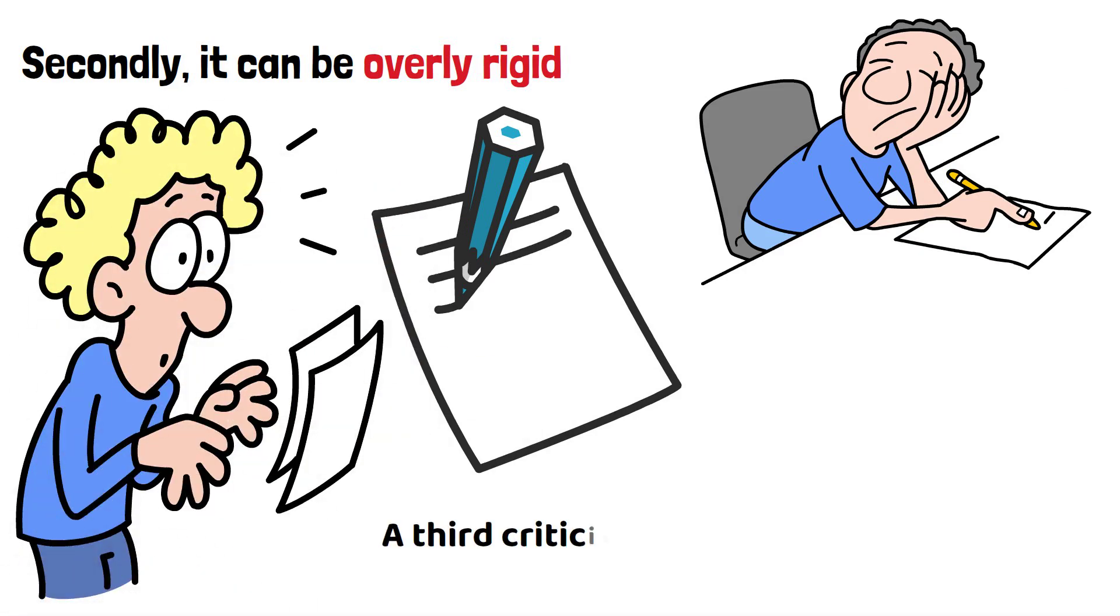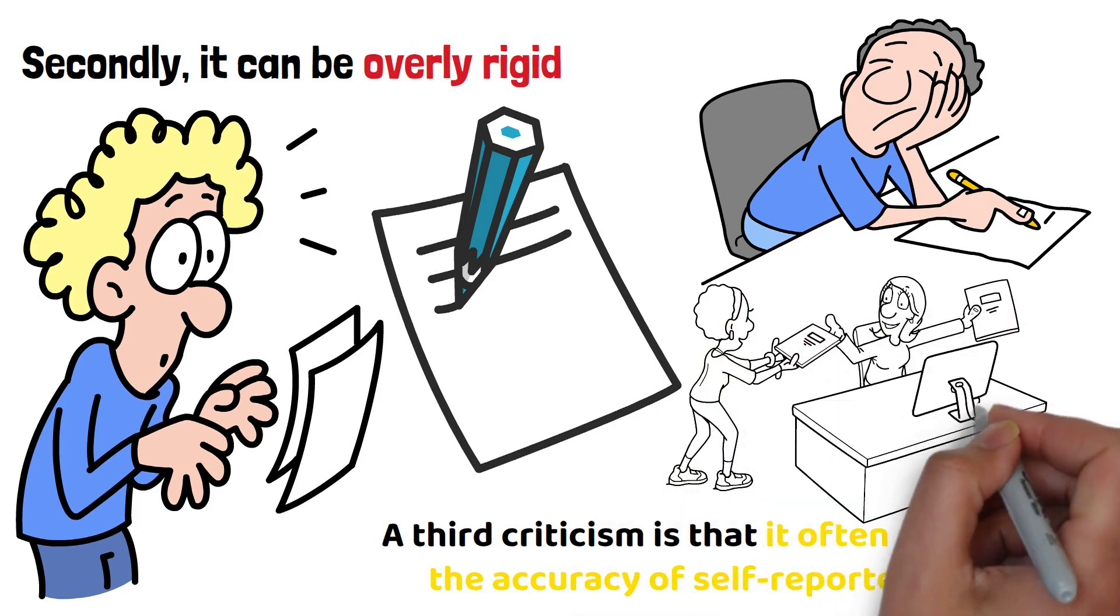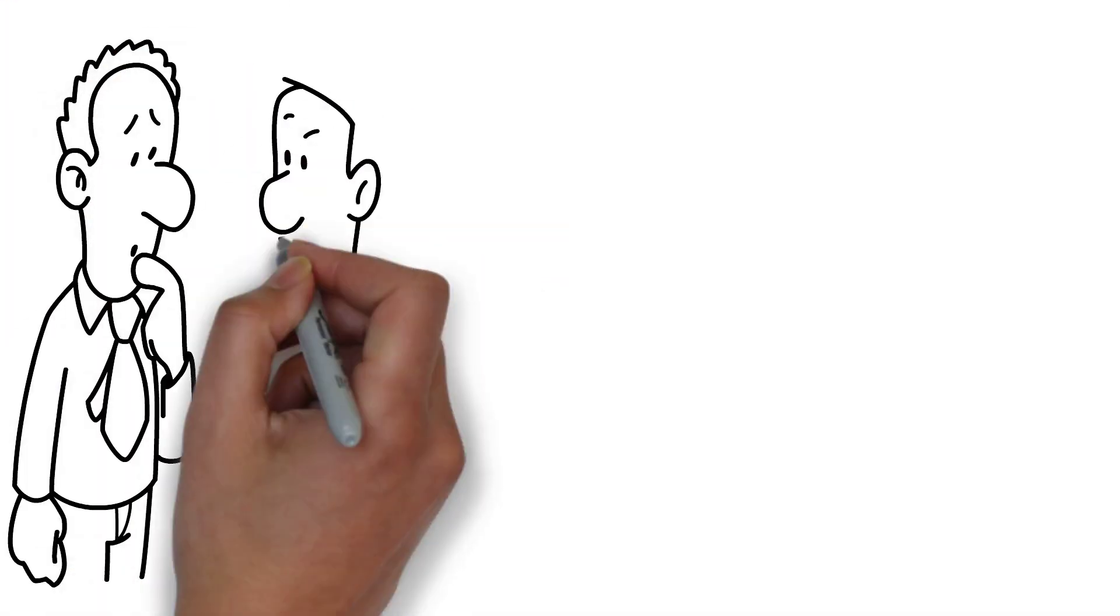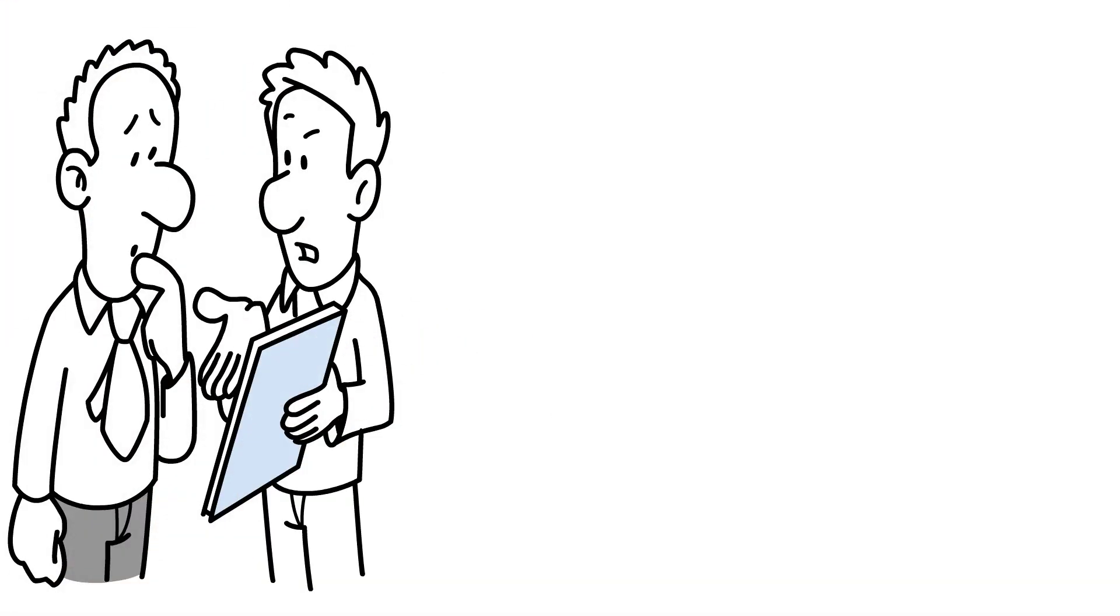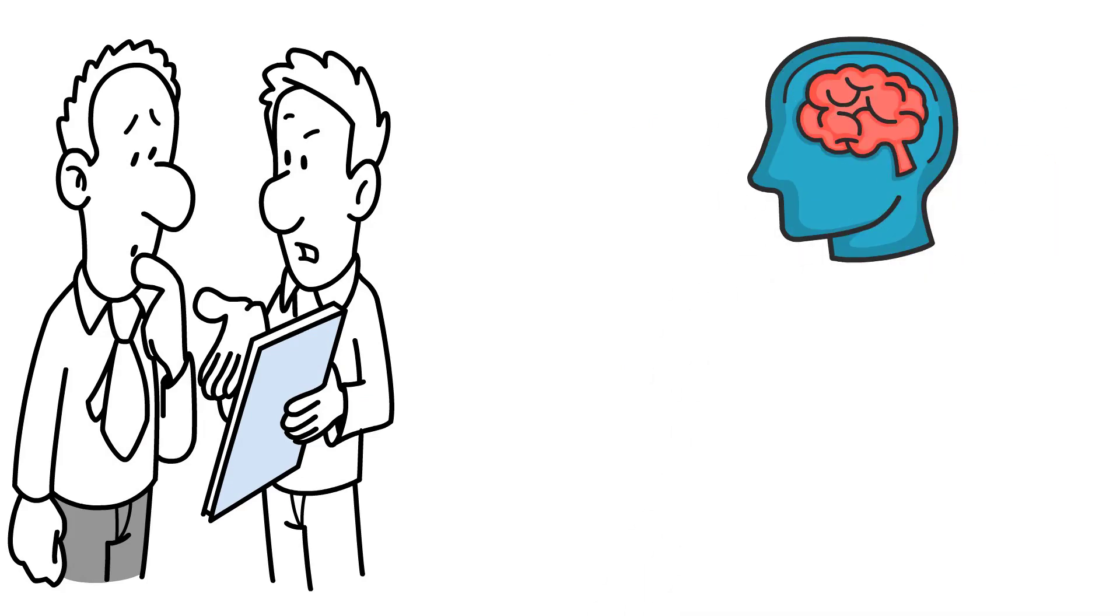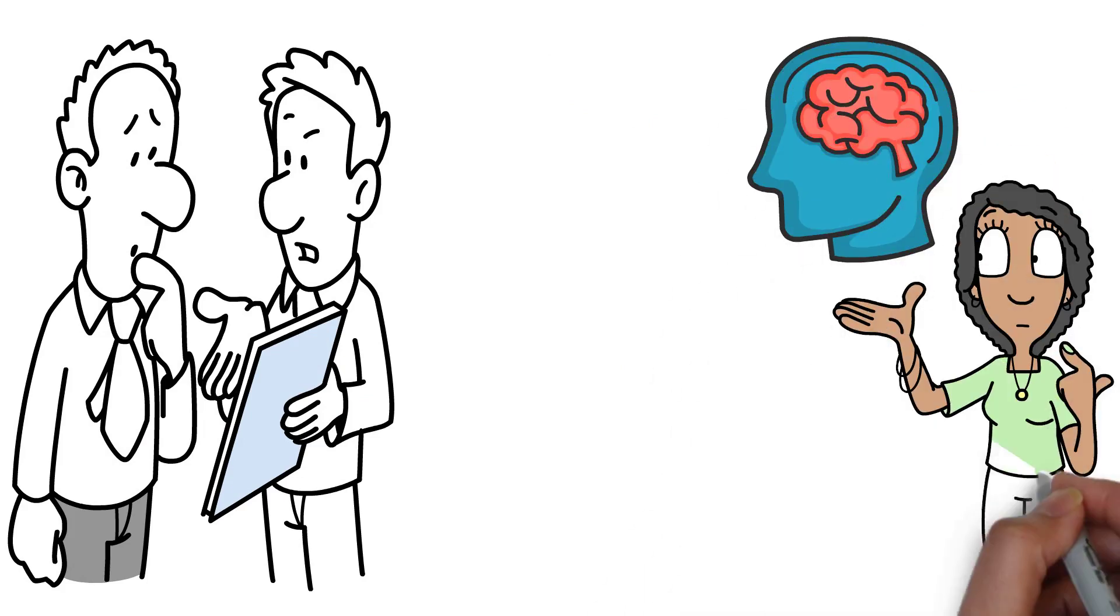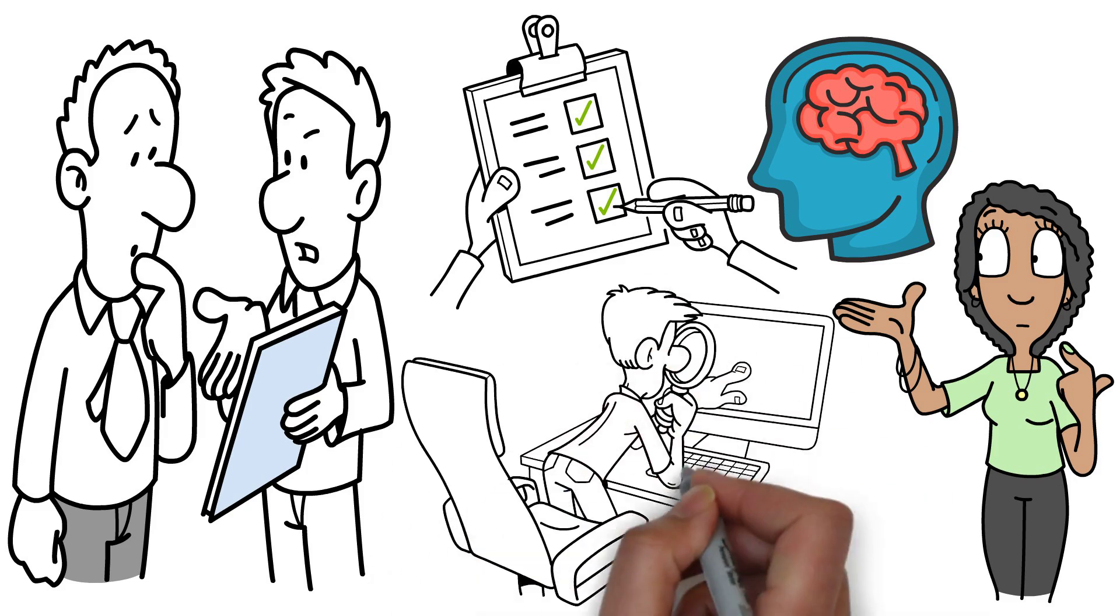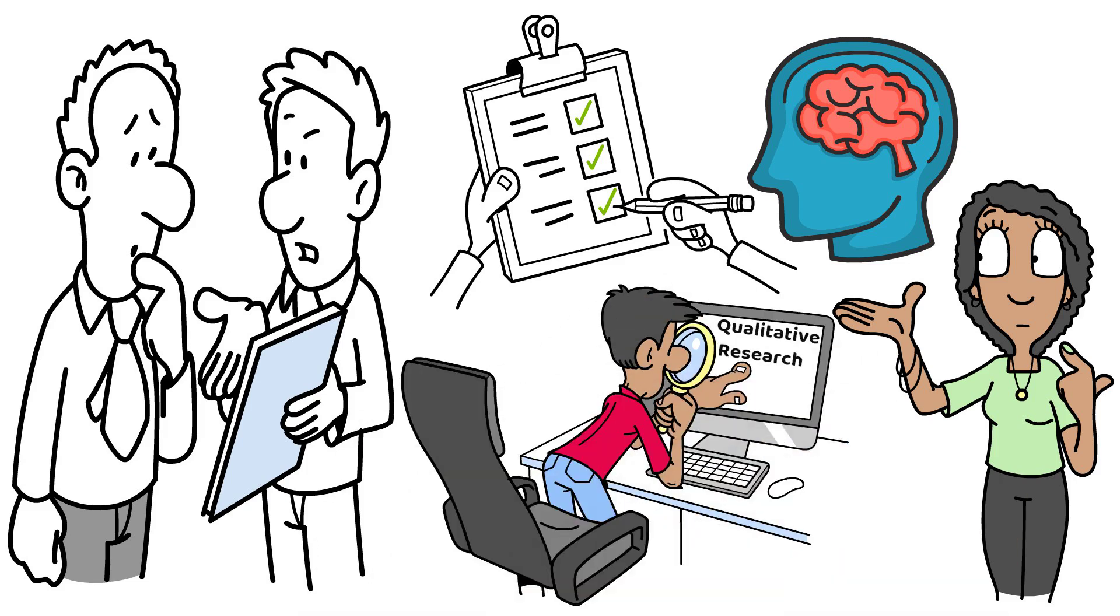A third criticism is that it often relies on the accuracy of self-reported data. Many quantitative studies depend on surveys where participants report their own experiences or behaviours. However, people may not always provide accurate or honest answers, either due to memory issues or a desire to present themselves in a certain way, leading to biased results. It's worth noting that the same criticism can be levelled at qualitative research.